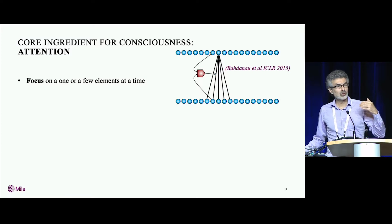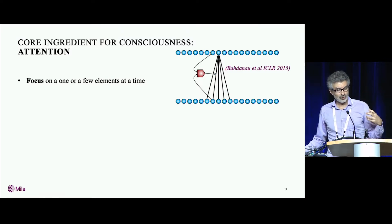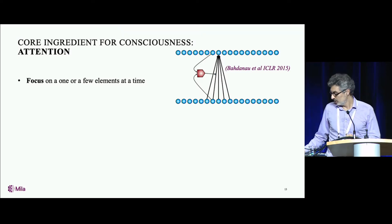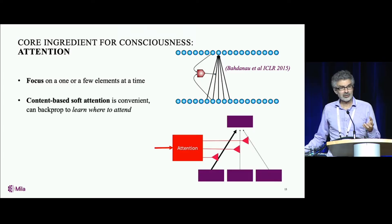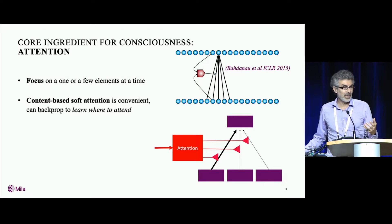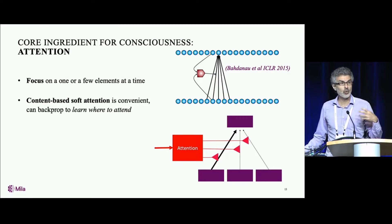When you produce the next word in English, when you're trying to translate from French, you want to really focus the computation on just the right few words in the French sentence that are relevant to do the translation. So we introduced a particular form of attention called content-based soft attention, which is very convenient because you can backprop through it, and so you can learn it. In other words, we can learn where to attend.